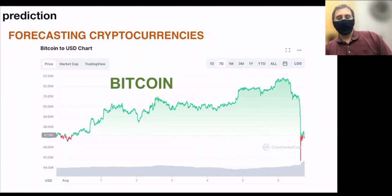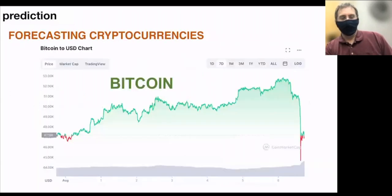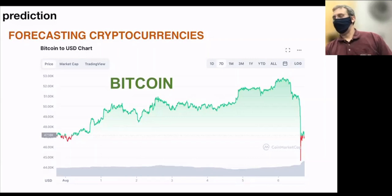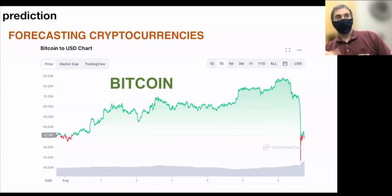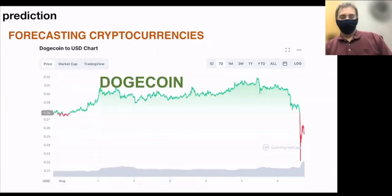For prediction, consider cryptocurrencies — an easily available signal. If you want to make some quick money, you buy and sell cryptocurrencies. Here's Bitcoin over the past few days: there's a big drop — maybe Elon Musk tweeted something. Dogecoin shows the same thing. Again, Elon Musk is involved.